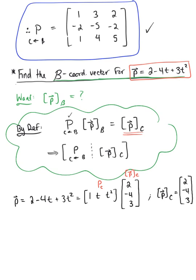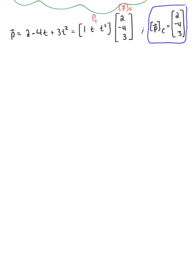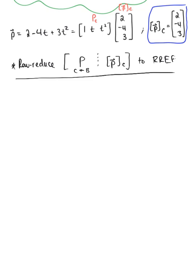We are ready to use the coordinates of p relative to C with the change of coordinates matrix found above. We row reduce the augmented matrix: the 3×3 change of coordinates matrix with columns [1, −2, 1], [3, −5, 4], [2, −2, 5], augmented with the column vector [2, −4, 3], reducing to row reduced echelon form.